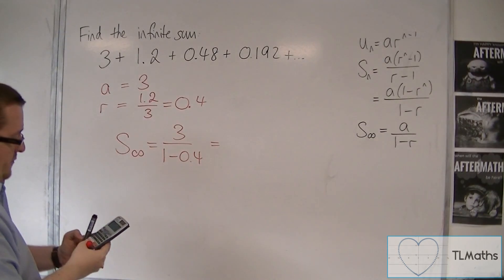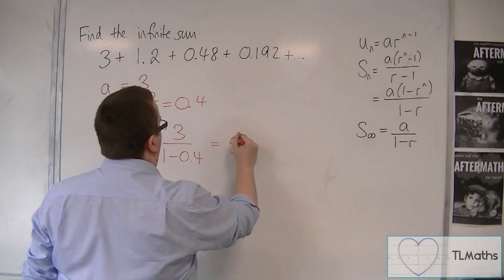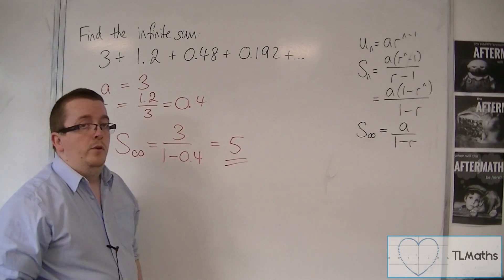So 3 divided by 1 minus 0.4, and that gets me 5. So in actual fact, these numbers add up to 5.